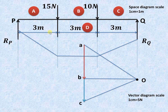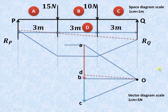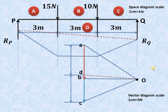We will join the starting point and the end point of the funicular polygon by a dotted line, then draw a line parallel to this dotted line from O. Wherever it intersects that particular line, that is your point D. As we have already seen, AD represents RP and CD (or DC) represents RQ. The length AD by scale gives reaction at P, and DC by scale gives reaction at Q.